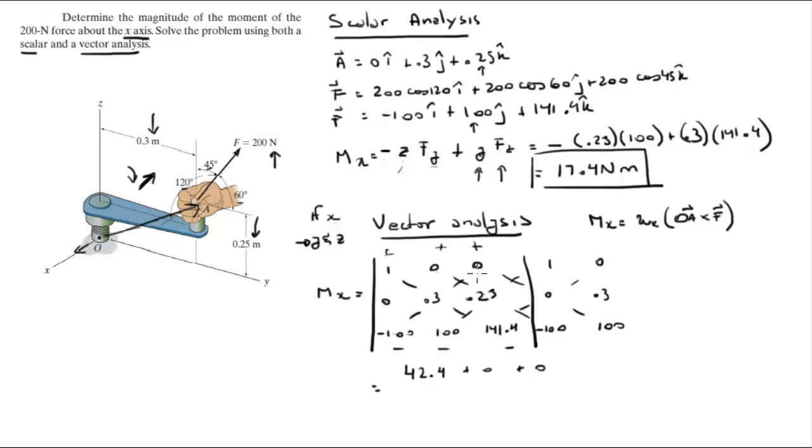Negative diagonals: first diagonal is 0 because there's a zero. Second diagonal is negative - that's 100 times 0.25 times 1, which is minus 25. This is 0, and the last one has two zeros so it's just 0. When you add this up, you get the same answer - it's equal to 17.4 Newton meters for the vector analysis.